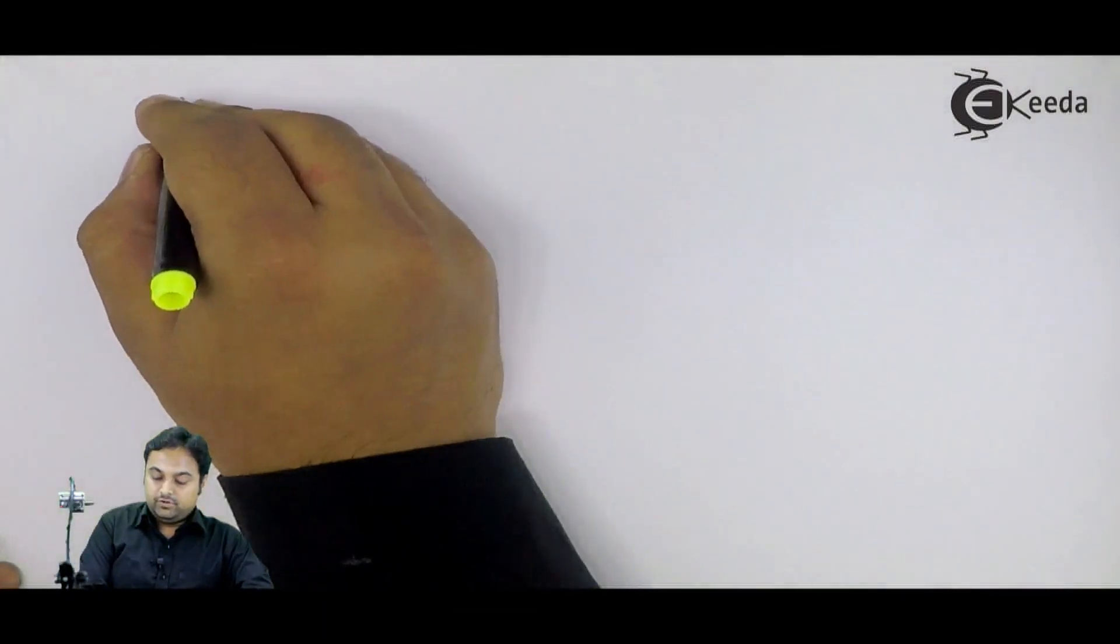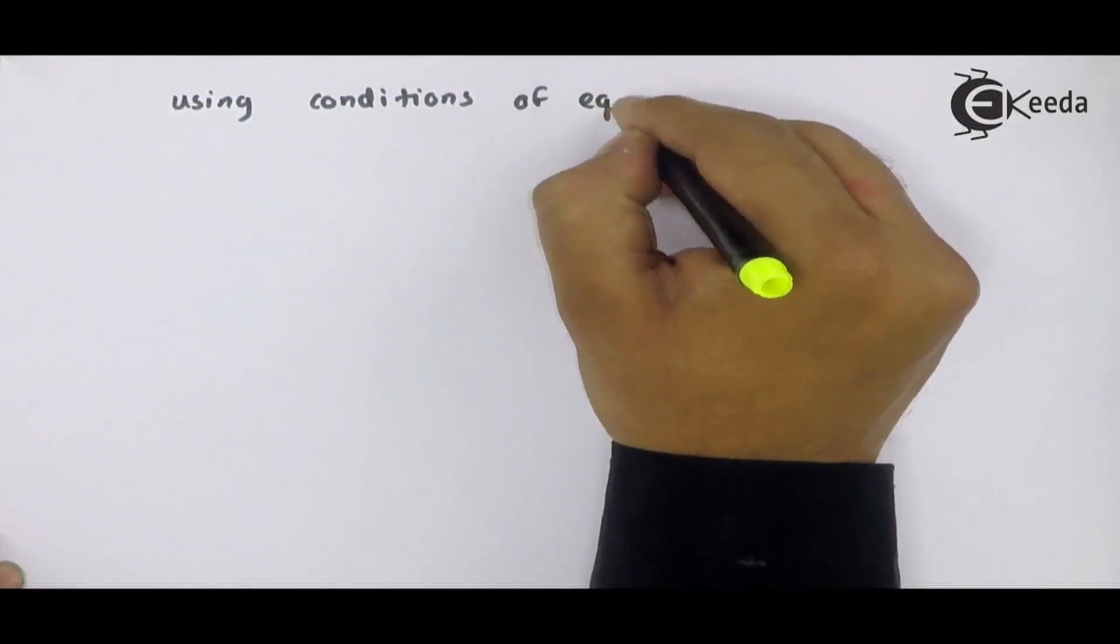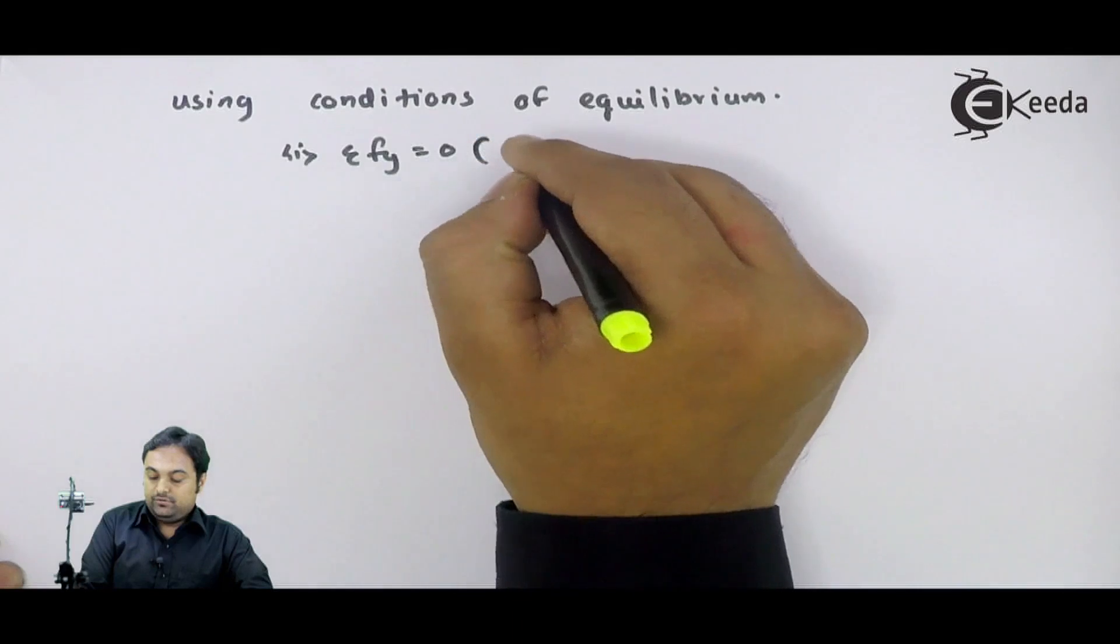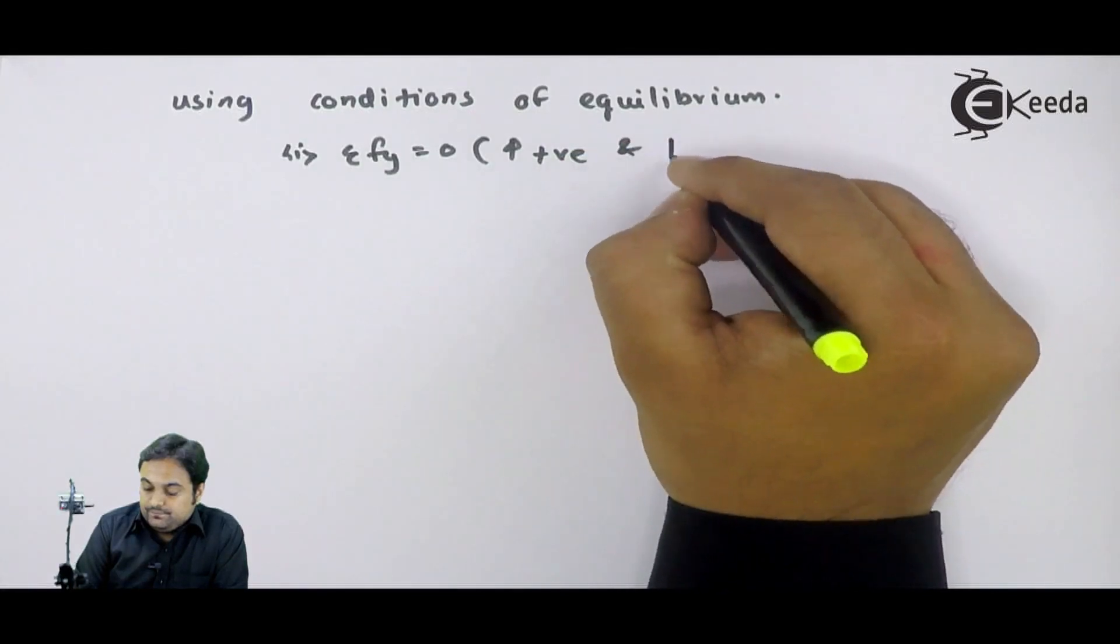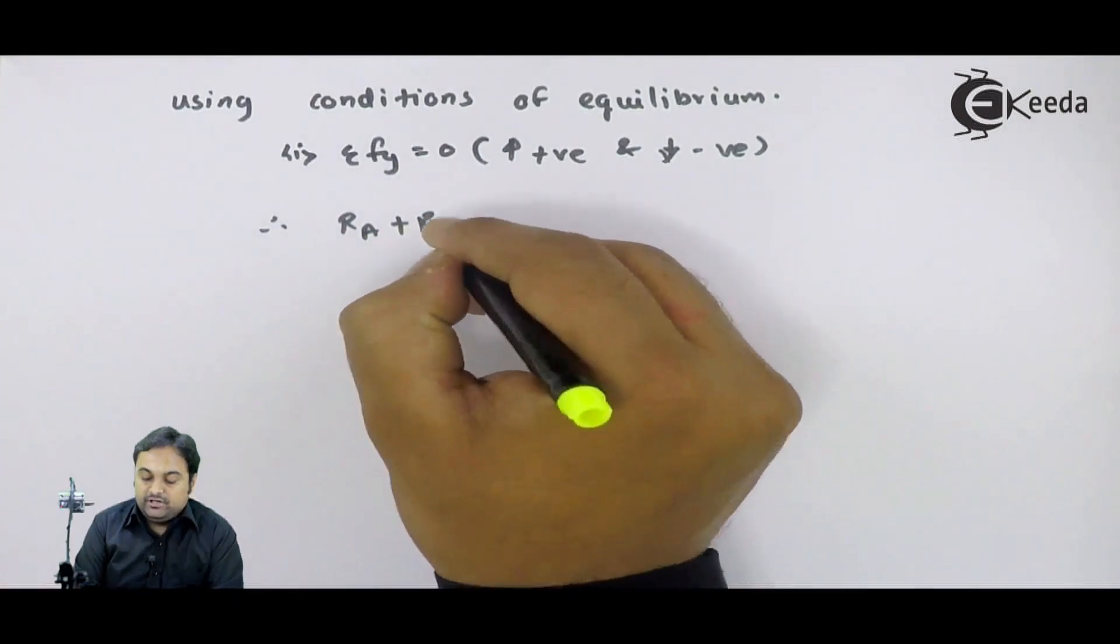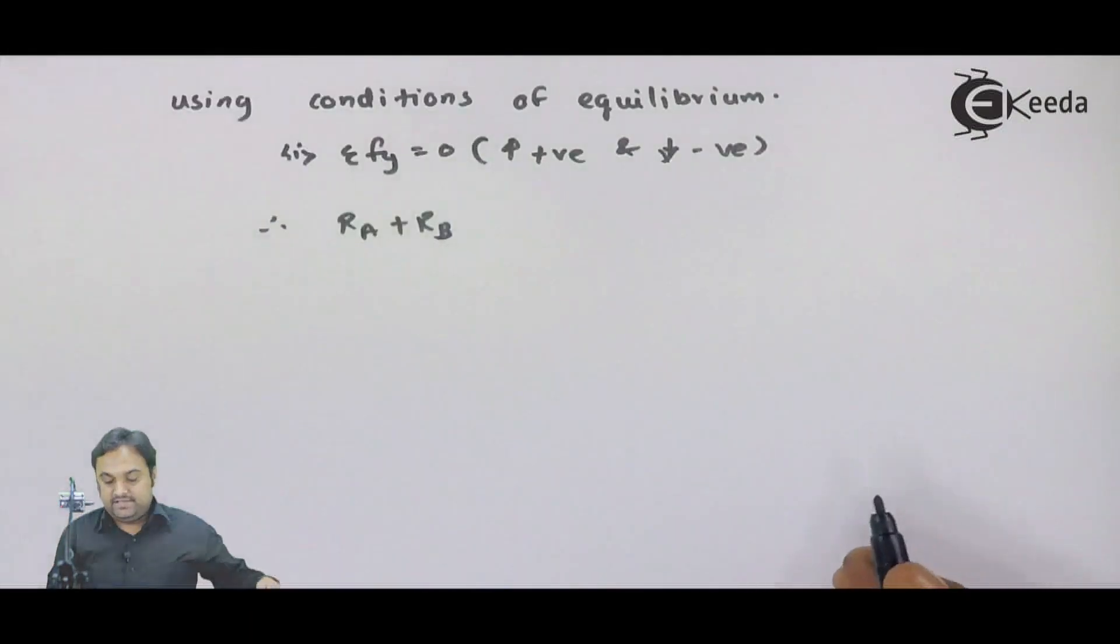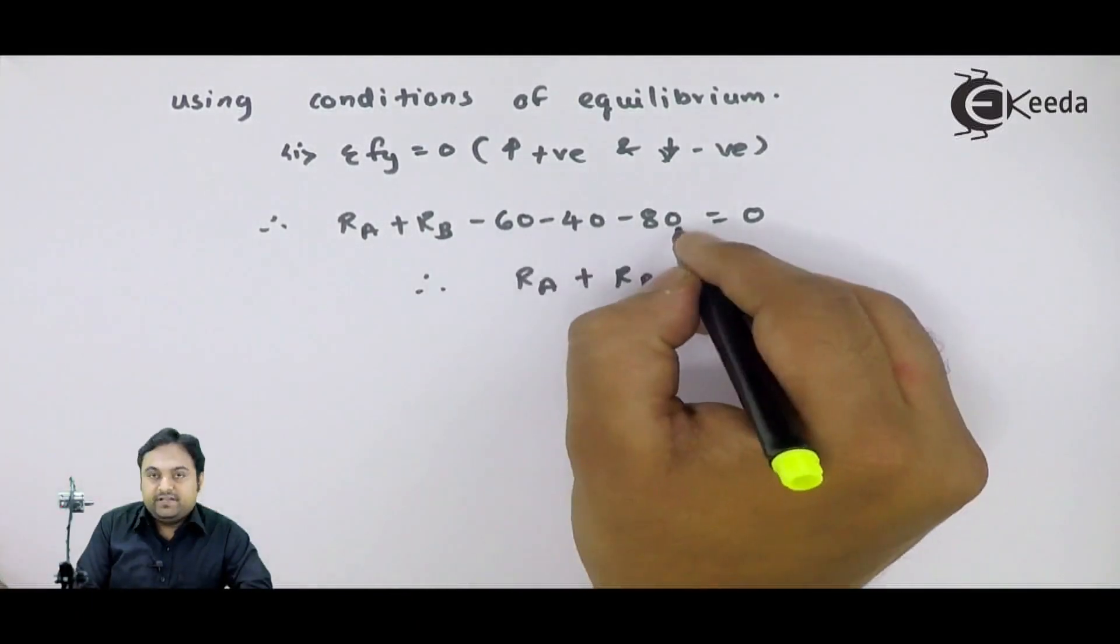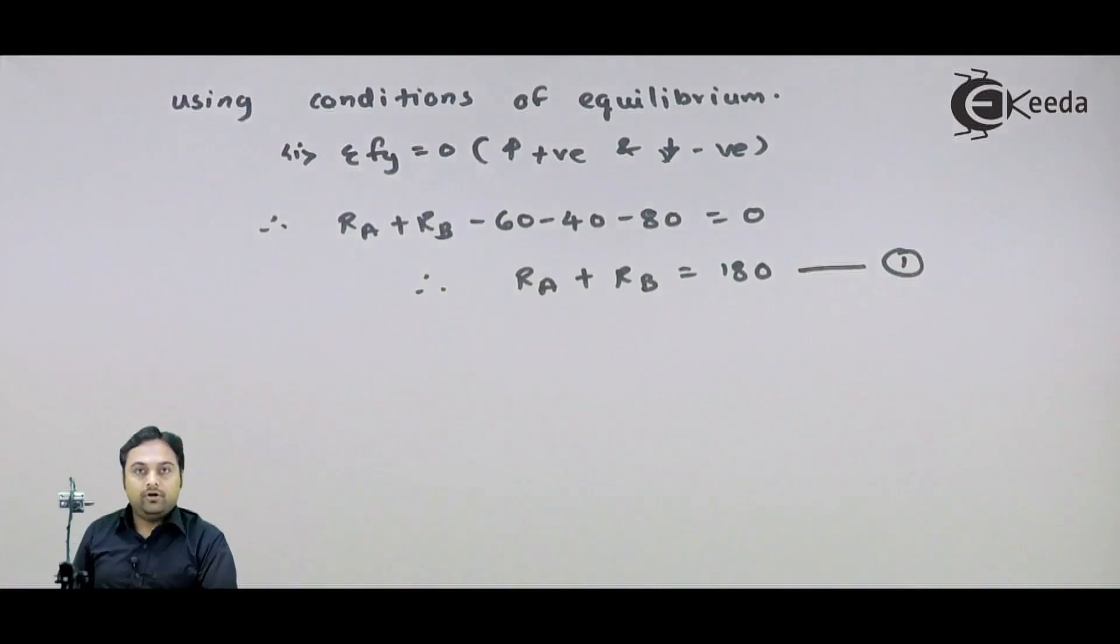Using conditions of equilibrium, the first one: summation of Fy is equal to 0. I am using Fy because no horizontal forces are there. Therefore, RA plus RB, since both are upwards positive, minus 60 minus 40 and minus 80. Therefore, RA plus RB equals 180, and this is my equation number 1.